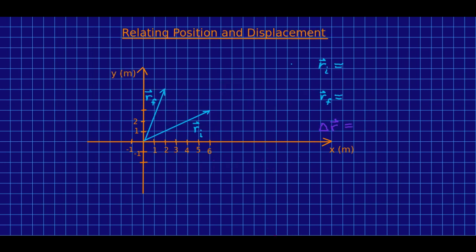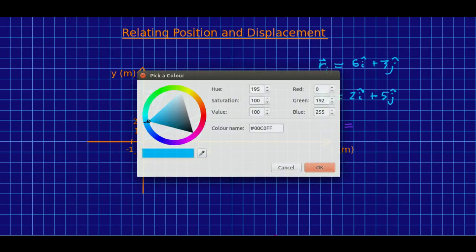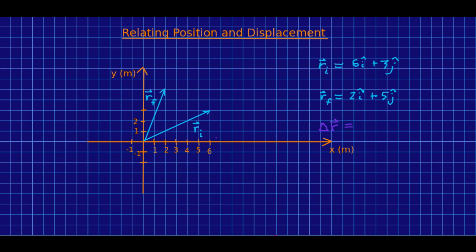Now let's use this to find a relationship between positions and displacements. So here are two position vectors. And for a position vector you can just look at where the end is because the tail is always at the origin. And maybe this is the source of confusion for some students. So this r_i is six i-hat plus three j-hat and this r_f is two i-hat plus five j-hat. So what's delta r, the displacement?